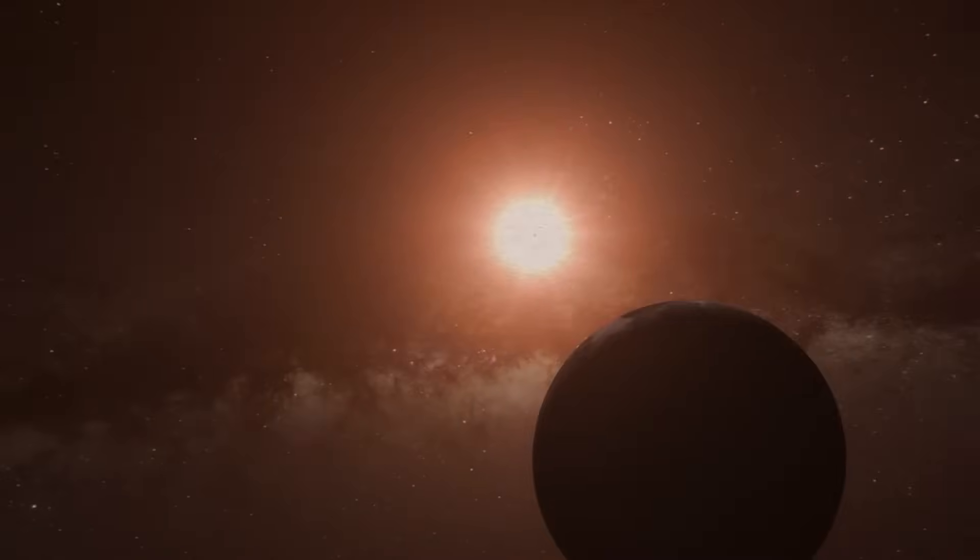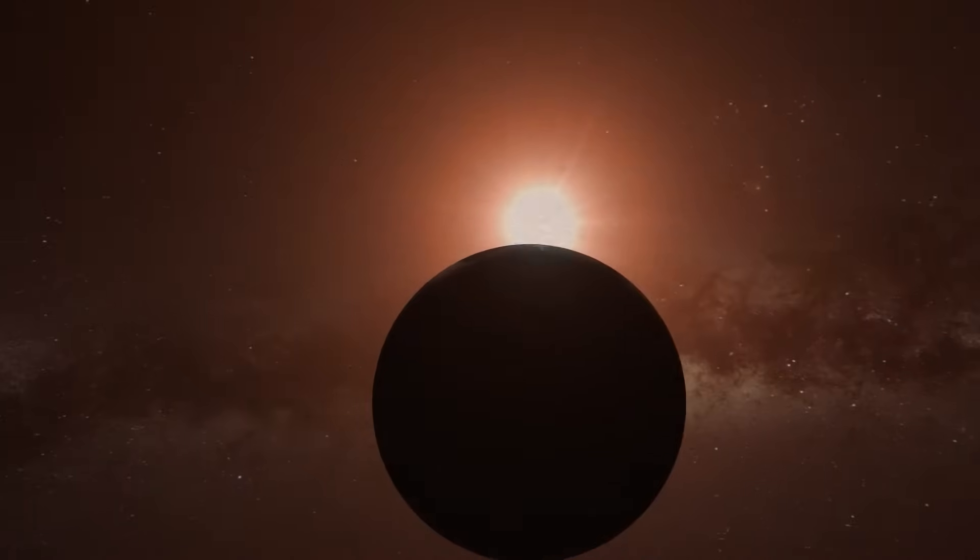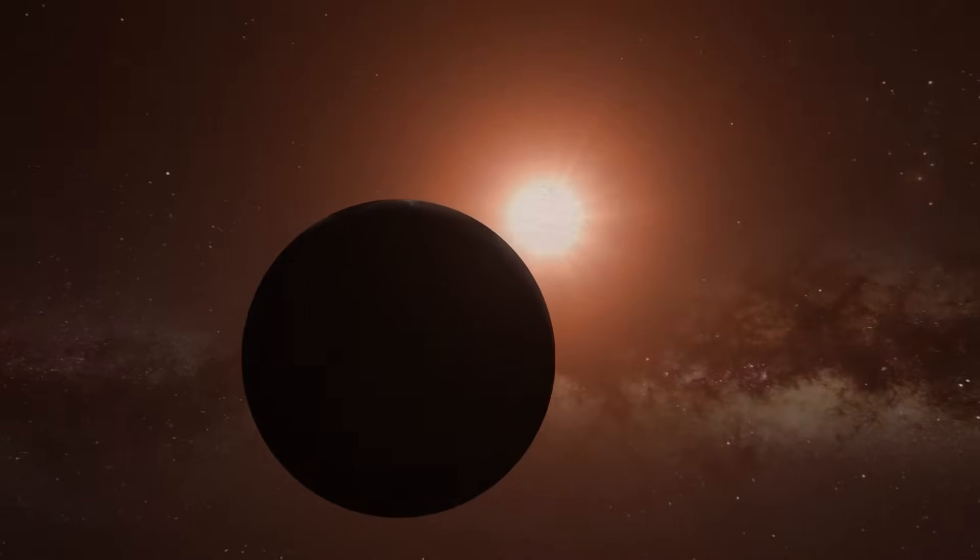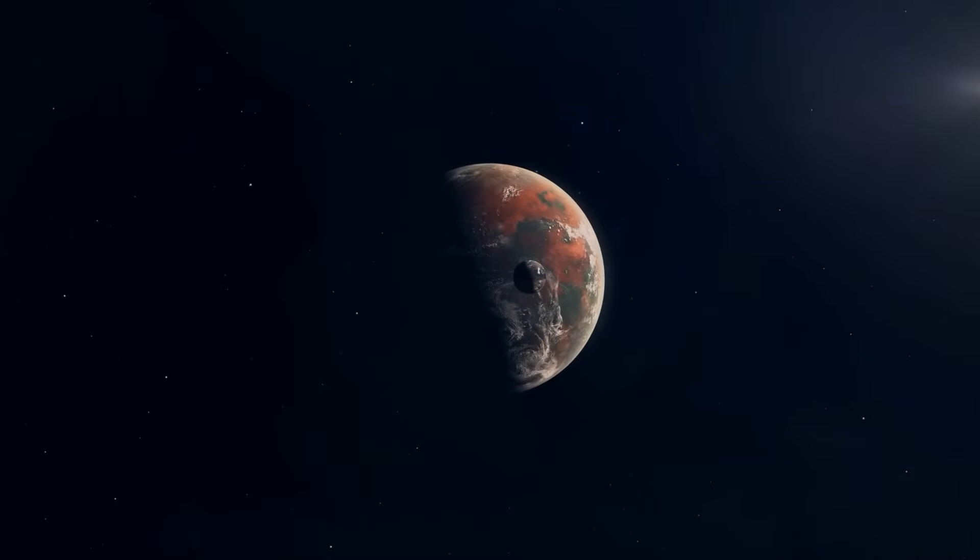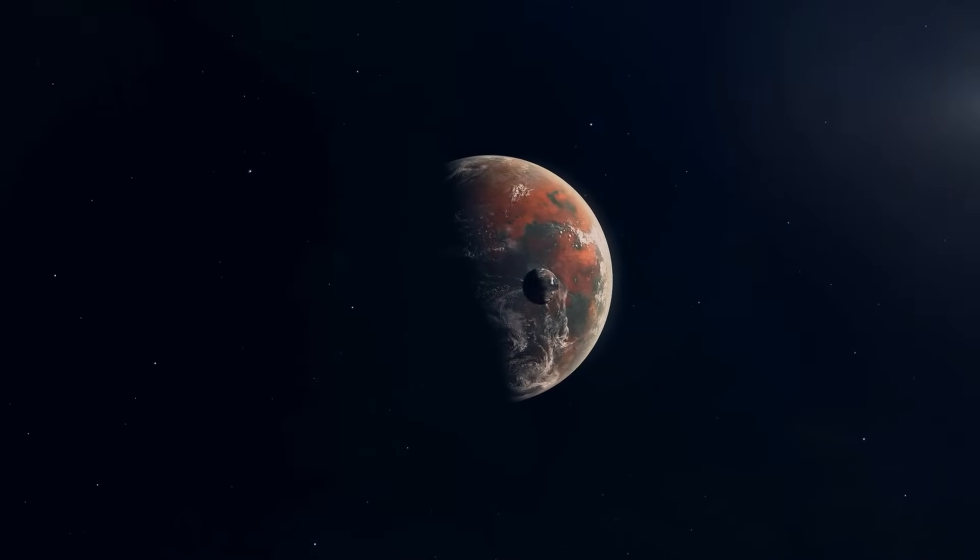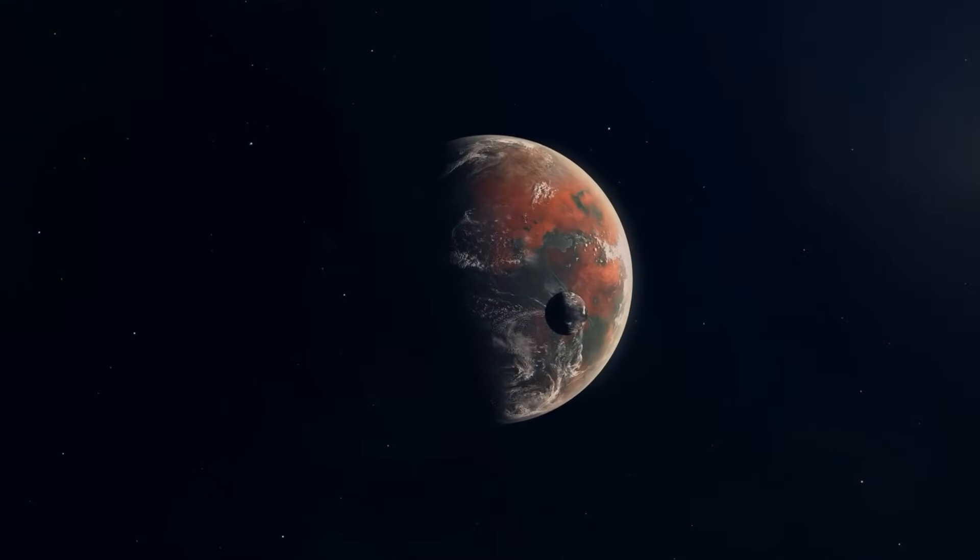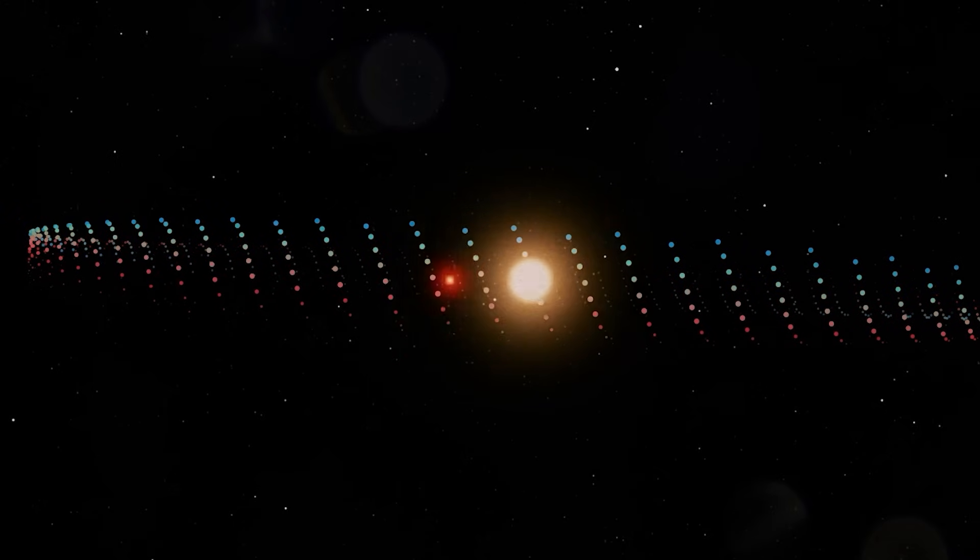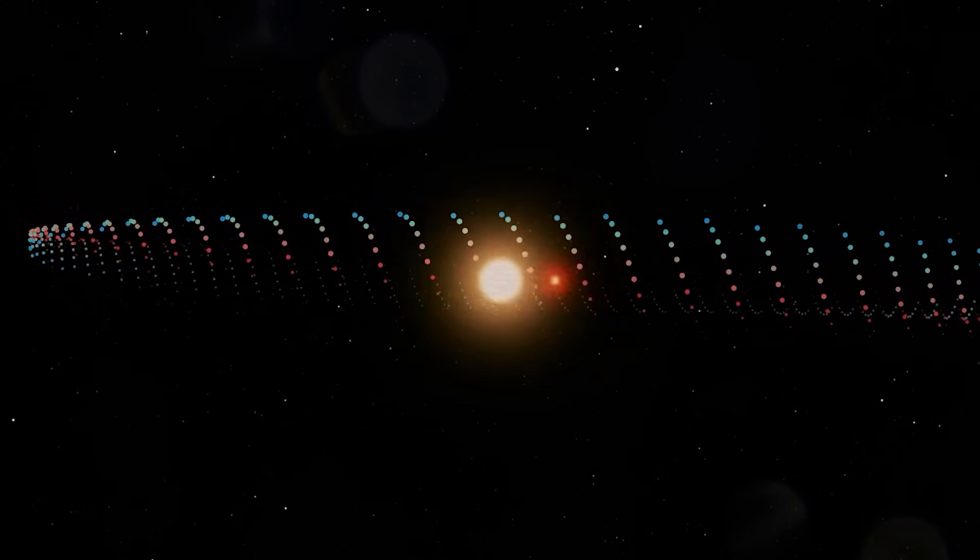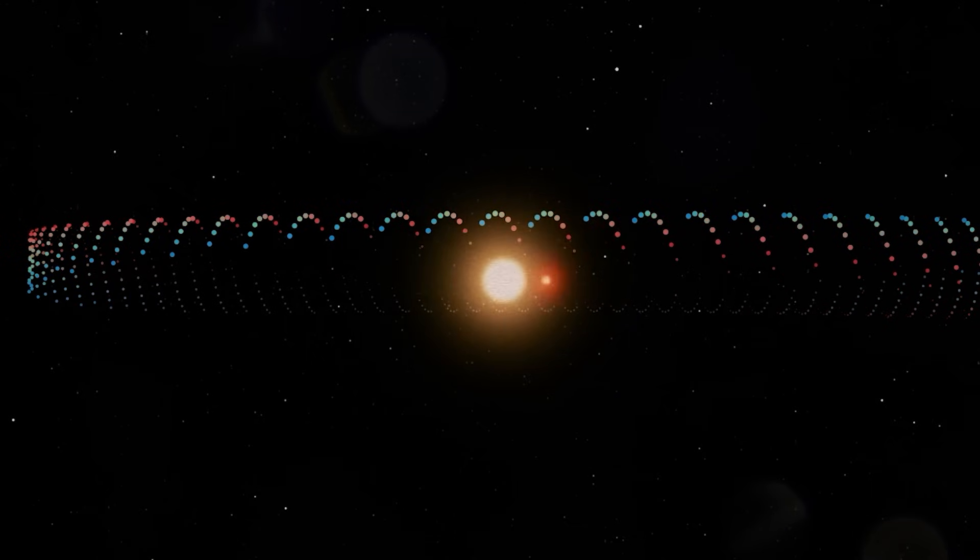The search for potentially habitable or life-bearing worlds in other solar systems depends in part on being able to determine if rocky Earth-like exoplanets actually have magnetic fields. This study not only demonstrates the existence of a magnetic field around this rocky exoplanet, but also suggests a viable strategy for discovering other such worlds.